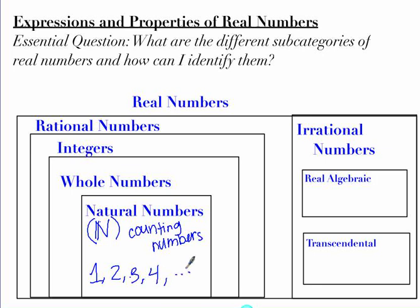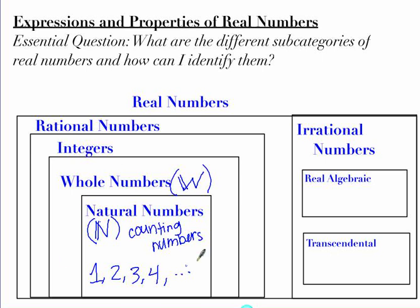Those are probably the easiest, most basic numbers — that's what we started off with. Moving up in our hierarchy, we get to the whole numbers. The symbol for that is a W with two little lines. Whole numbers are all the counting numbers, but one other number is added: the number zero.